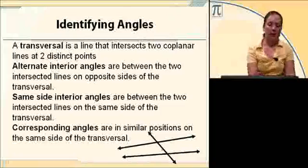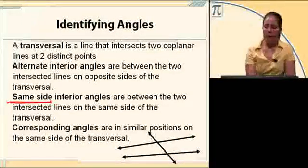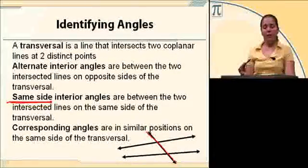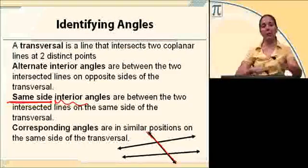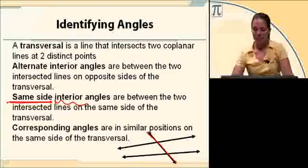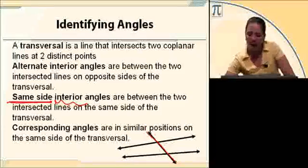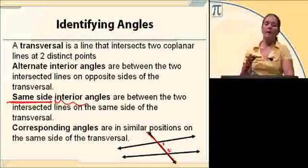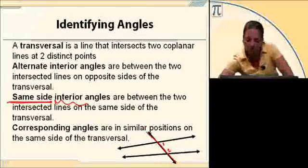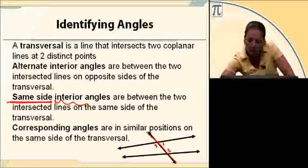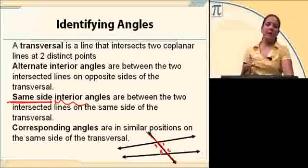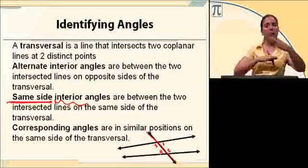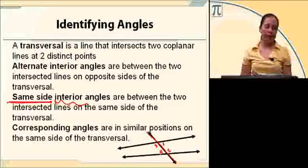Same side interior angles are on the same side of the transversal, and interior means in between those two lines. From the picture, angle one and angle two are same side interior angles, and angle three and angle four are same side interior angles because they're on the same side of the transversal, in between the two lines cut by it.